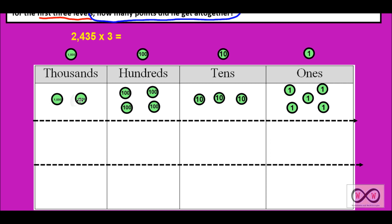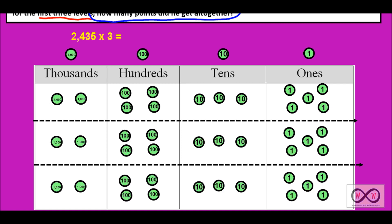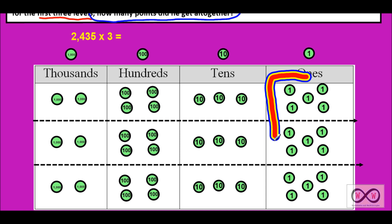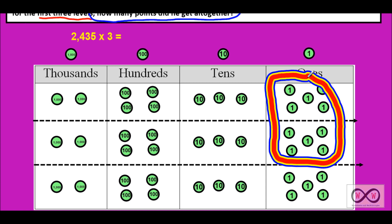Now we want to go ahead and make this again in the other partitions. Now that we have our 2,435 represented three times on the place value chart, we can go through and bundle up starting with the ones. We can regroup. So we've got in the ones place, organized neatly into groups of five. Five plus five equals 10 — we can bundle those up and make another 10. So we've circled those, and now we have an extra 10 in the tens place.